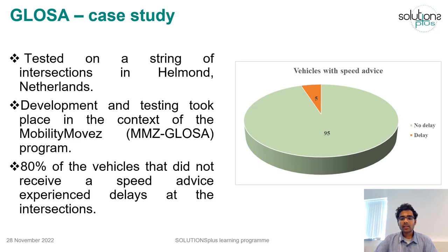Results from a real-world case study are shown here to highlight the effectiveness of the GLOSA service. The GLOSA system was tested on a string of intersections in Helmond, Netherlands. Overall, 90 percent of the connected vehicles participating in the trial received speed advice, and 95 percent of those vehicles were able to pass the intersection without any delay — an extremely encouraging result. In comparison, 80 percent of vehicles that did not receive speed advice experienced delays at the intersection, having to slow down and suffering severe braking or standstill at the intersection.